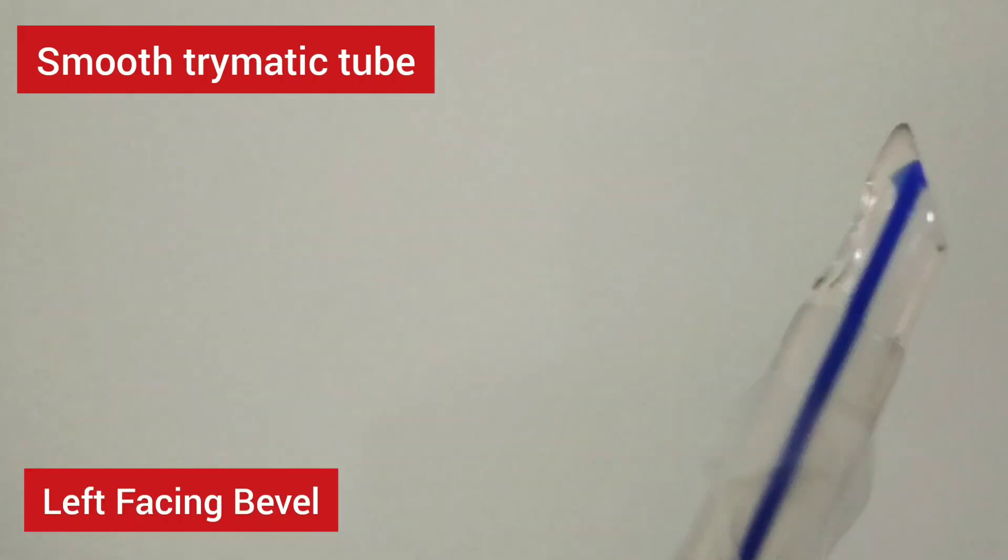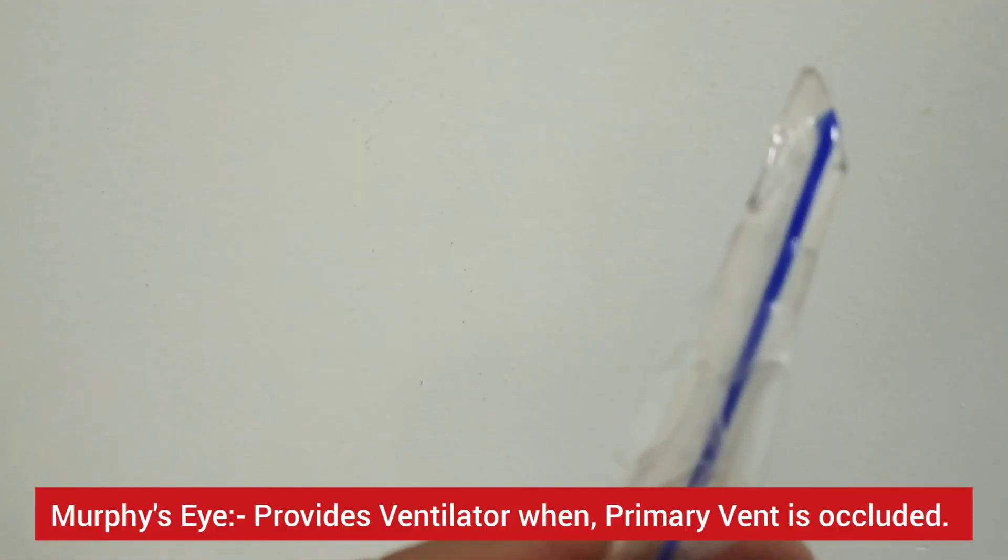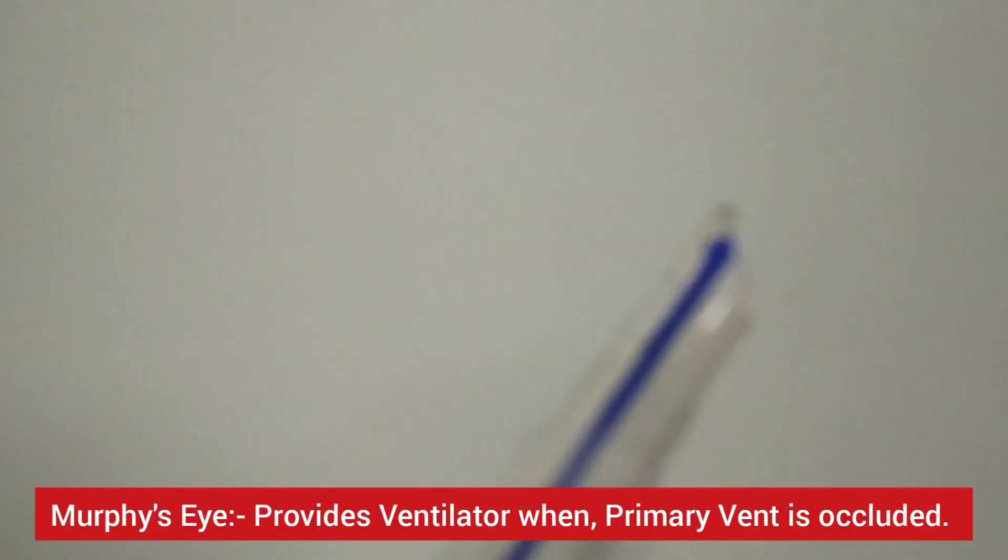These are smooth, atraumatic tubes and have left side facing bevels. Here we can see the left side bevel with the Murphy's eye. Murphy's eye provides ventilation in case the primary vent is occluded.